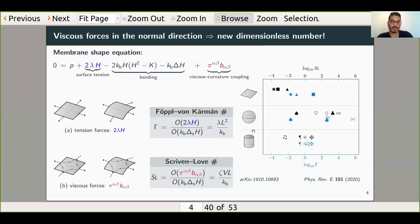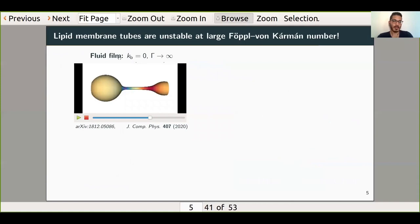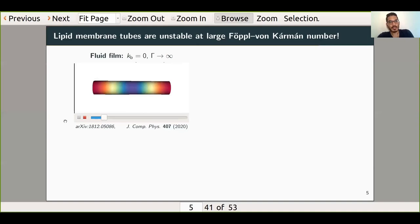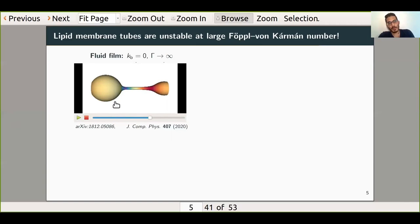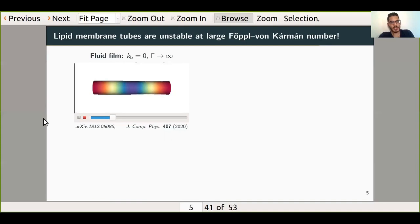To investigate this further, we wanted to look at cylinders specifically. One thing that I can do is look at the behavior of a cylinder in the limit of zero bending modulus, which is equivalent to setting this Föppl-von Kármán number to infinity. You can think of this as the limit of a soap bubble. What we find here is that if I take an initial cylinder and I applied just a very small perturbation, then that perturbation is going to reinforce itself. The cylinder is unstable and it's going to undergo what's known as a pearling instability. I'll play this one more time just to show it once again.